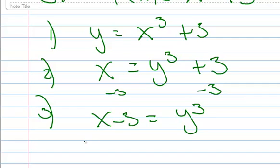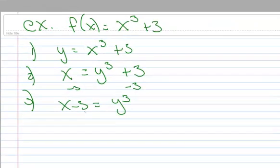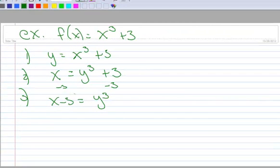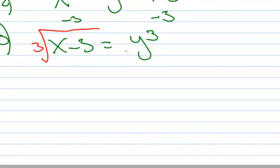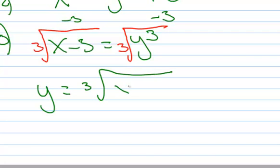And then to get y by itself, I'm going to, here I'll do it two different ways. So we will take the cube root of everything, cube root of the left side, cube root of the right side. So I'm going to flip it around. And so I have y equals the cube root of x minus 3.